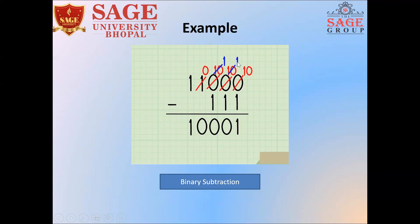For each position that has already borrowed, we have 1 minus 1, so that is 0. Again here, since we have already borrowed, this is 1 minus 1, which is 0. Here we also have 1 minus 1, so that is 0. This position is already 0, and it gave a borrow, so here it becomes 0. This position is 0. There is no number to subtract here, so this remains 1.